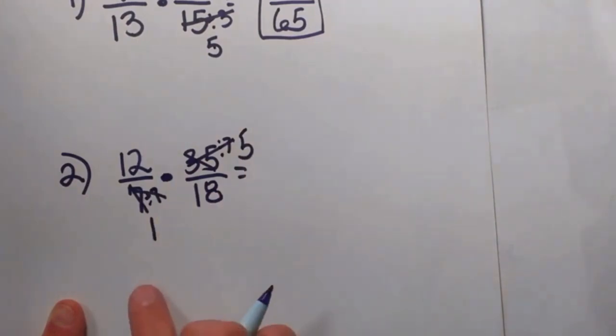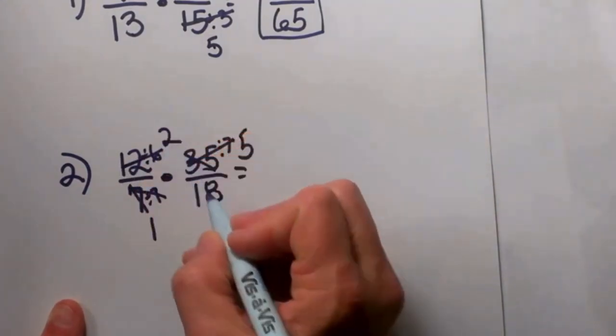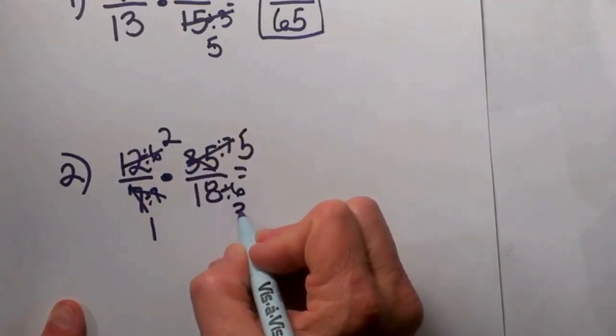Now 12 and 18, one does not go into the other, but they do have a common factor of 6. So let's take a 6 out of here and that gives us 2, and a 6 out of here and that gives us 3.